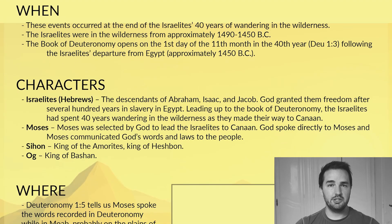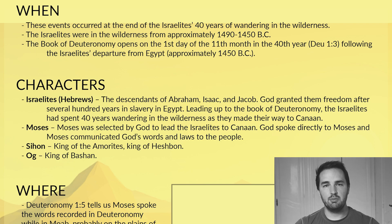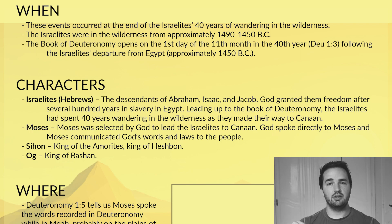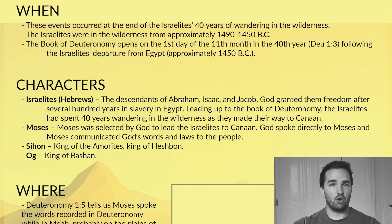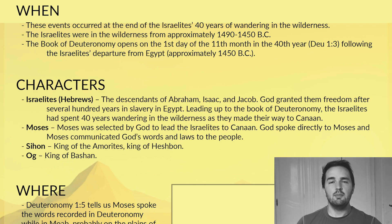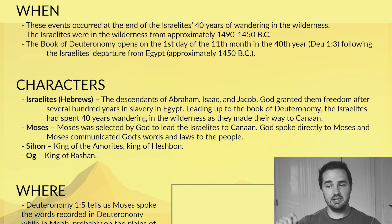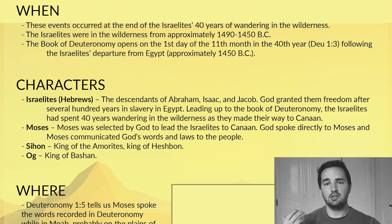In terms of our characters, we have the Israelites. This is a large nation of people at this point. They're the descendants of Abraham, Isaac, and Jacob, and they're on their way to the land of Canaan because God promised to give them that land as a home. Their leader is our second character, that is Moses. Moses was God's selected man to lead the people out of Egypt and take them to Canaan, and God had a special relationship with Moses.